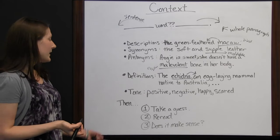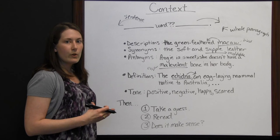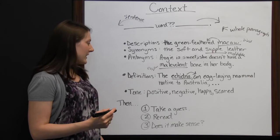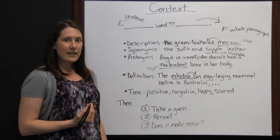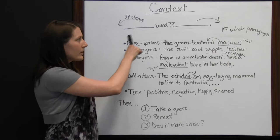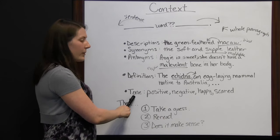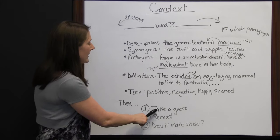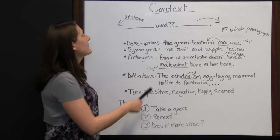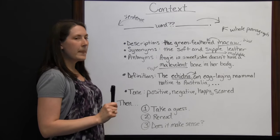The last clue is tone. Is the rest of this paragraph positive, negative, happy, scared? If a paragraph has one consistent tone, the unfamiliar word probably relates to that tone. Once you've looked at clues before and after the sentence, looked at the whole paragraph, and checked for description, synonym, antonym, definition, or tone, take a guess and reread the sentence to see if it makes sense. For example, 'the green feathered bird' makes sense. 'The soft and moldable leather' makes sense. 'She doesn't have an evil bone in her body' — that works too.